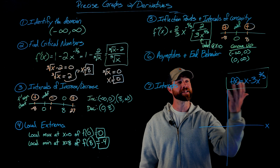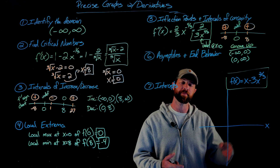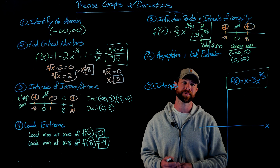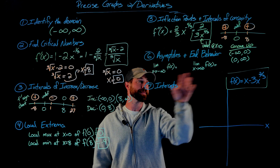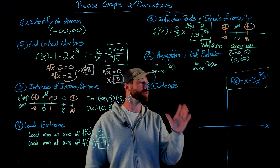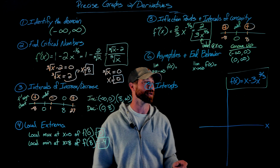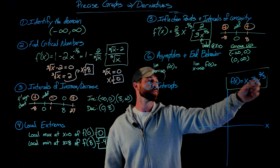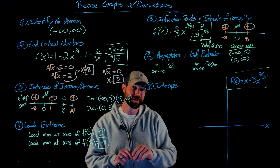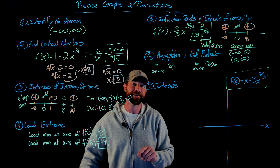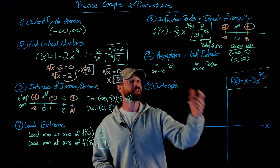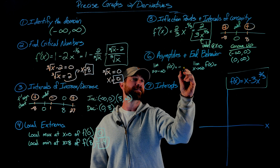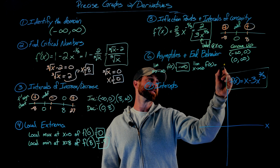As for asymptotes, this function has none — no vertical asymptotes from domain breaks, and no horizontal asymptotes since it's not an exponential or rational function. For end behavior: while it's not technically a polynomial because of the fractional exponent, the degree of the x term (1) is larger than two-thirds, so the x term determines end behavior. As x goes to negative infinity, f(x) goes to negative infinity, and as x goes to positive infinity, f(x) goes to positive infinity — just like y = x.